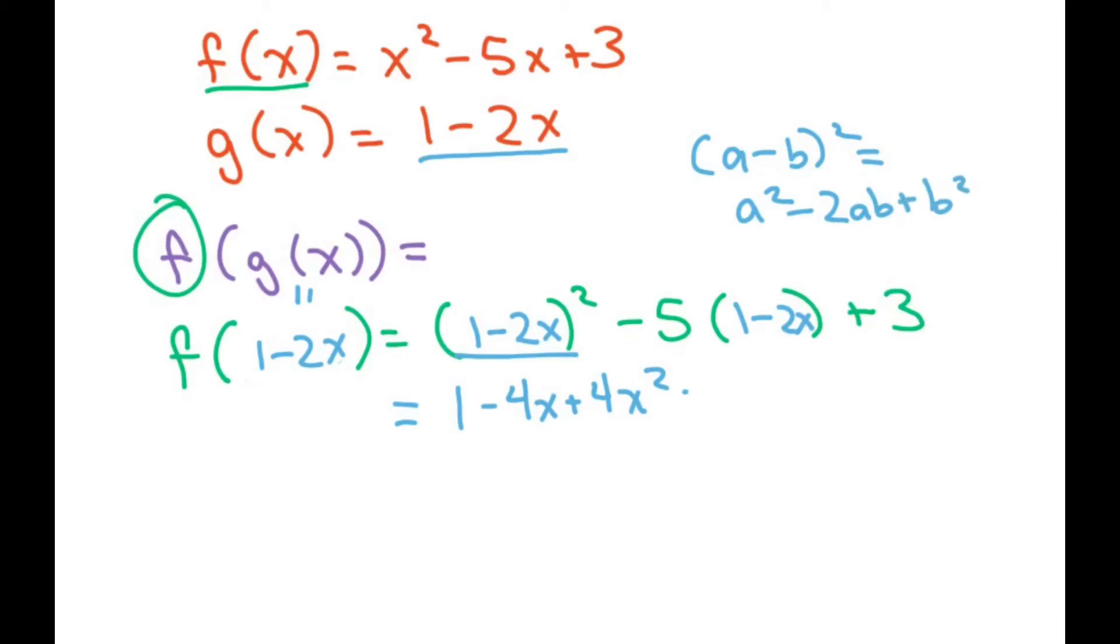All right, now distribute the negative 5 and then we have the plus 3. Then we merely collect like terms. So I'll just start here. We have 1 minus 5 plus 3. So that's going to be 4 minus 5 is negative 1.